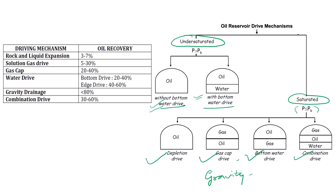This chart compares oil recovery for different drive mechanisms. Rock and liquid expansion gives 3–7% recovery; solution gas drive gives 5–30%; gas cap drive gives 20–40%; bottom water drive gives 20–40%; edge water drive gives 40–60%; gravity drainage gives up to around 80%; and combination drive gives around 30–60%.